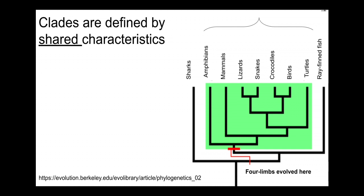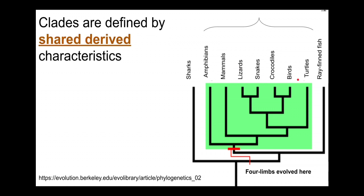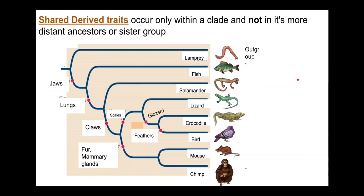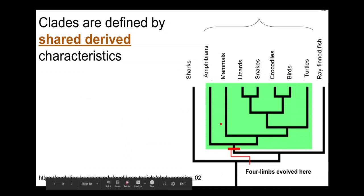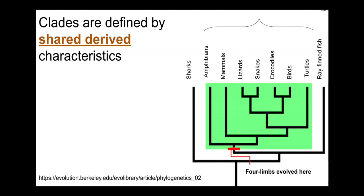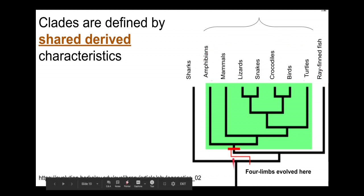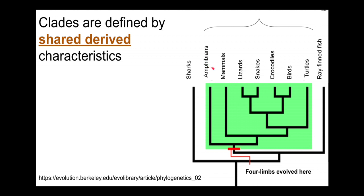Clades are defined by shared characteristics — by things that are similar that allow us to group organisms together. Here is a clade: amphibians, mammals, lizards, snakes, crocodiles, birds, and turtles. They all have some important shared characteristics — these are all tetrapods, four-limbed organisms. Tetrapods are defined as a clade along with their common ancestors sharing that characteristic. Snakes, we know from anatomical studies and fossils, used to have four limbs.